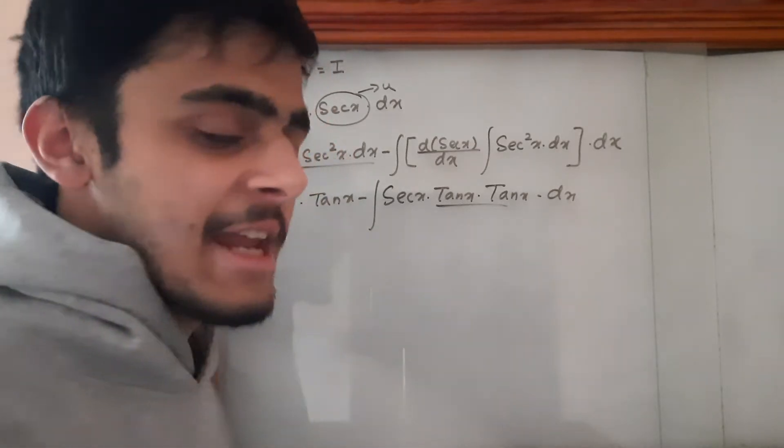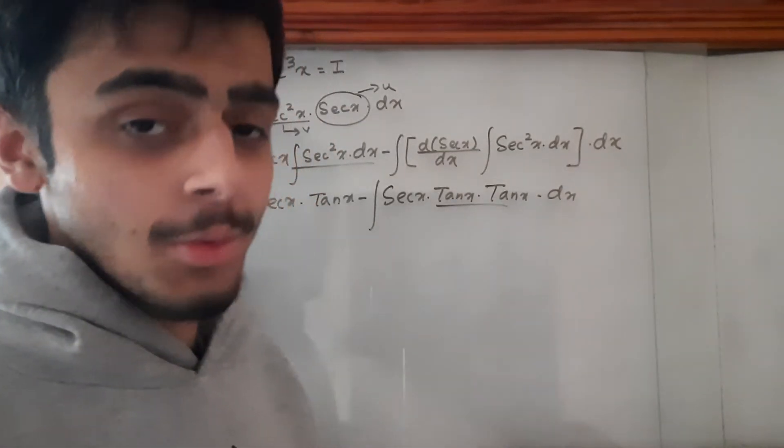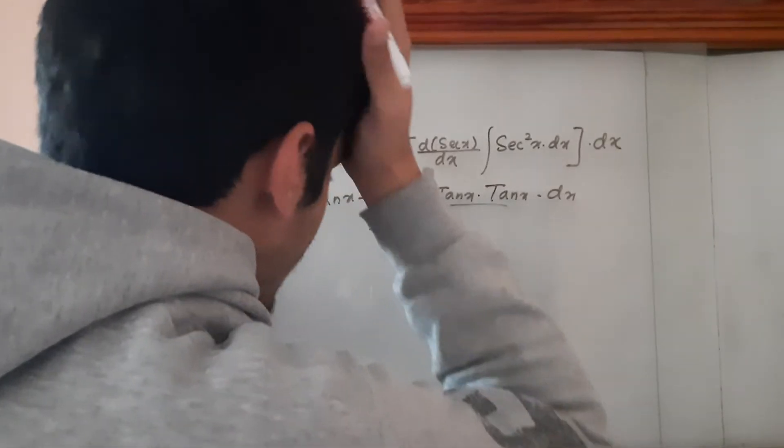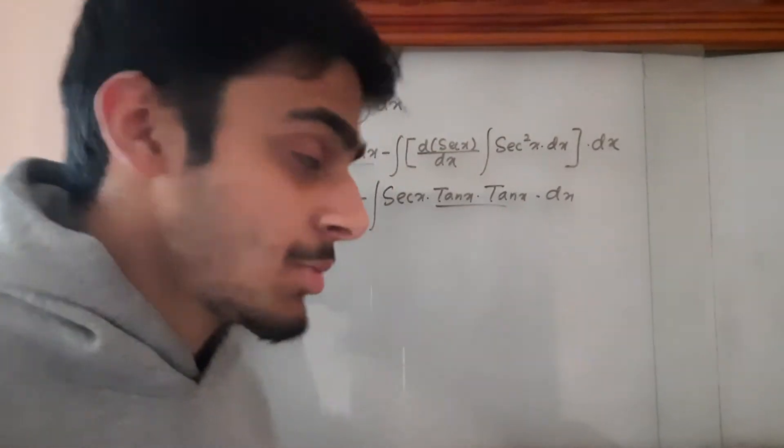This term can be written as tan²x, and we know that tan²x = sec²x - 1.